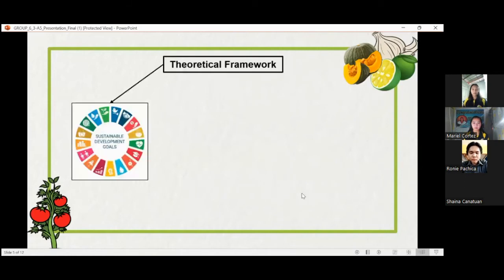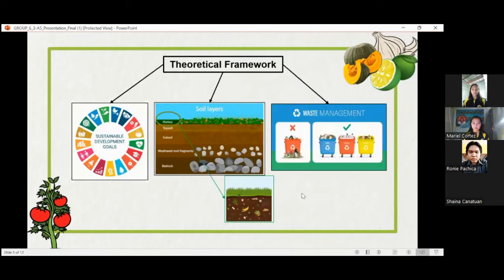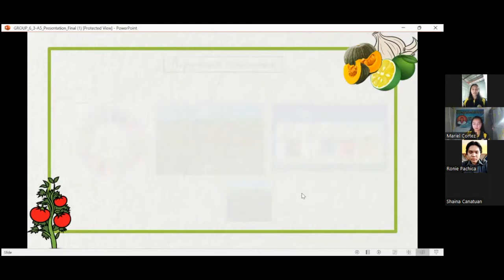Theoretical framework. This experimental research is based on the Sustainable Development Goals Theory, the number 12 goal, which ensures sustainable consumption and production patterns. The humus theory of plant nutrition which conveys insights on chemicals that are similar to them in nature and theory of waste management, a unified body of information about waste and waste management.